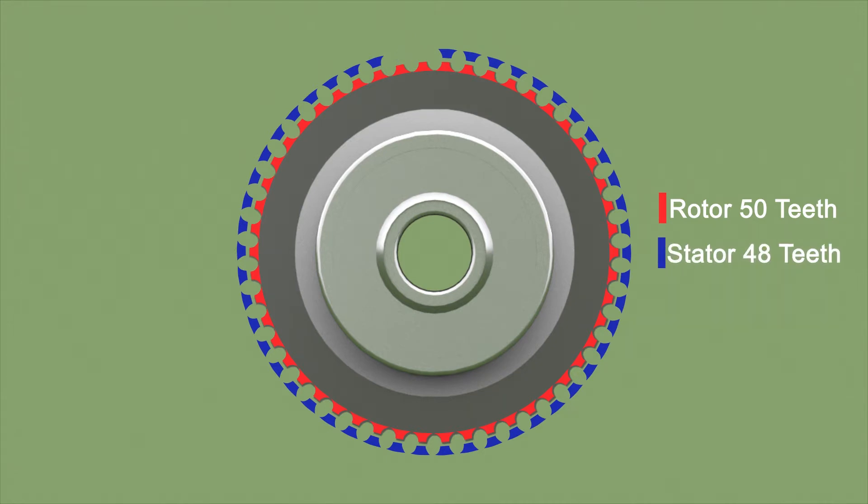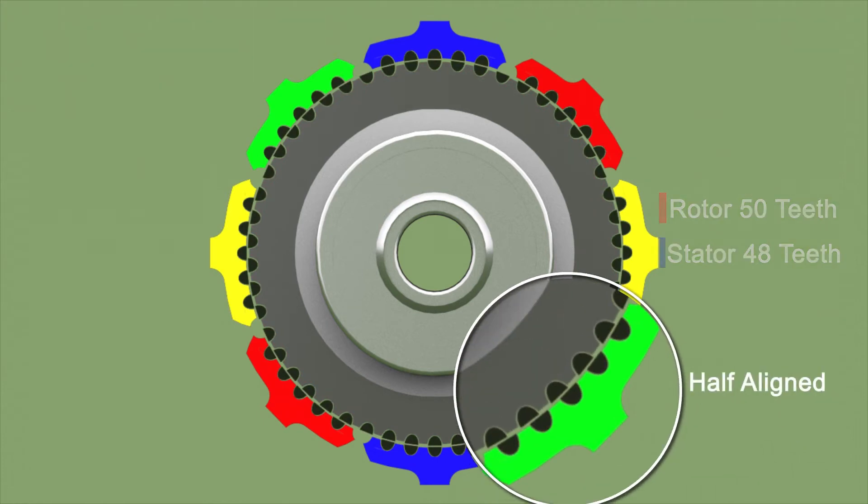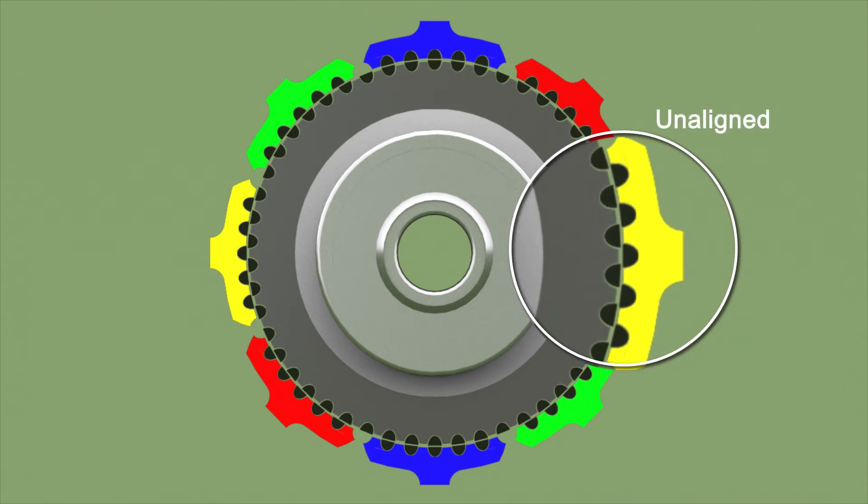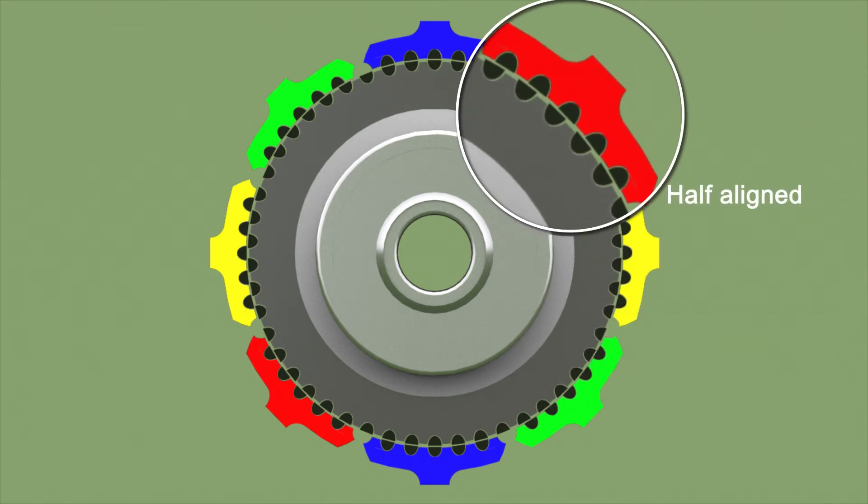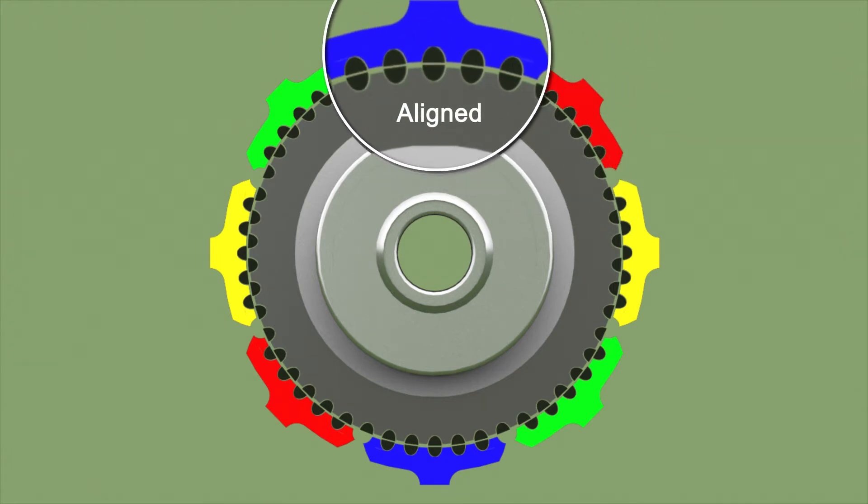Now, let's arrange the 48 teeth into 4 group pairs like we showed in the video. Green group of teeth is half aligned with rotor. Teeth of yellow group are not aligned with the teeth of rotor. Teeth of red group are half aligned with the teeth of rotor and blue group are completely aligned with the teeth of rotor.